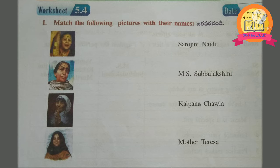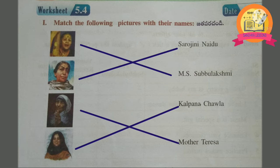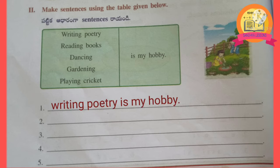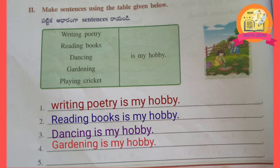Worksheet 5.4, 1st Roman: match the following pictures with their names. Children, let us make some sentences using the phrases given in the table. Writing poetry is my hobby. Reading books is my hobby. Dancing is my hobby. Gardening is my hobby. Playing cricket is my hobby.